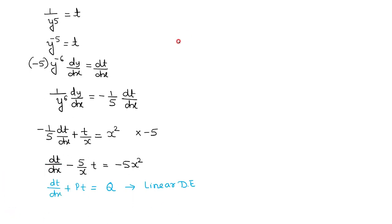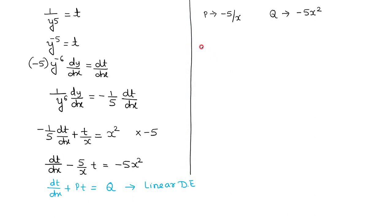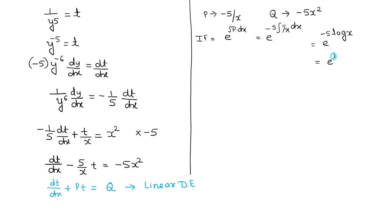On comparing, we get P equal to minus 5/x and Q equal to minus 5x squared. Before we write the solution of the linear differential equation, we will find the integrating factor, which is given by e raised to the integral of P dx. That is e raised to minus 5 times integral of (1/x) dx. Since minus 5 is a constant, integration of 1/x is log x, giving minus 5 log x, which we write as log of x raised to minus 5. So e raised to log gives x raised to minus 5, which we write as 1/x^5. This is the integrating factor.